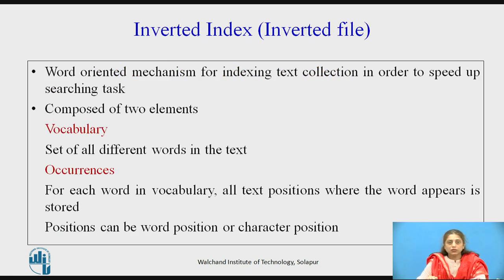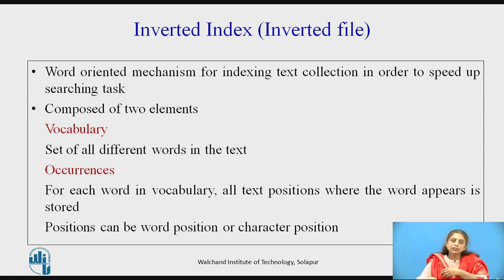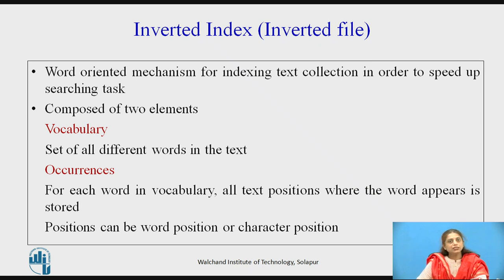Let us see what is an inverted index, which is also called as an inverted file. This is a word-oriented mechanism for indexing a text collection. We define an index to speed up the searching task. This inverted index consists of two components: one is vocabulary, and the other one is occurrences. Vocabulary is nothing but the set of all different words or keywords occurring in the text.